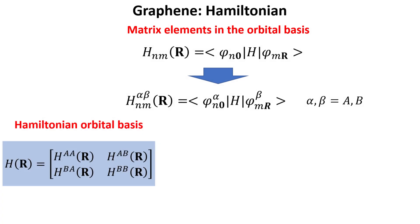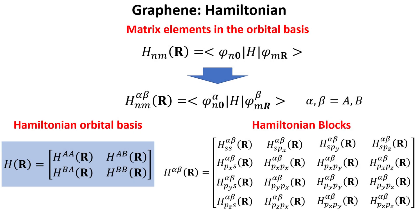Hence the Hamiltonian in the orbital basis can be organized in sublattice blocks, as shown. The Hamiltonian blocks on the diagonal — that is, the AA block and the BB block — are four-by-four matrices containing the Hamiltonian elements between different atomic orbitals between two A-type or B-type carbon atoms respectively. The off-diagonal block contains all the Hamiltonian elements between different atomic orbitals between A-type and B-type carbons. More explicitly, each Hamiltonian block is shown here, and our job now is to calculate all the elements of all sublattice blocks.